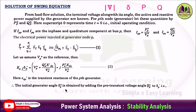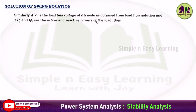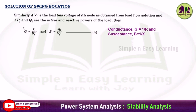Therefore, the initial generator angle delta-p-0 is obtained by adding the pre-transient voltage angle beta-p-0 to delta-p'. So delta-p-0 equals delta-p' plus beta-p-0. This is equation 3, where delta-p-0 is the initial generator angle and beta-p is the pre-transient voltage angle. Similarly, if V is the load bus voltage of the i-th node from the load flow solution, and if Pi and Qi are the real and reactive power of the load, then conductance g equals Pi divided by Vi-squared, and susceptance Bi equals Qi divided by Vi-squared, where g equals 1/R and susceptance equals 1/X.